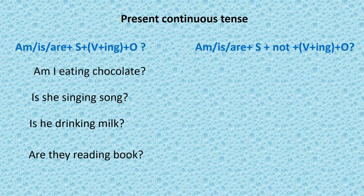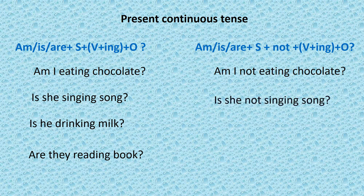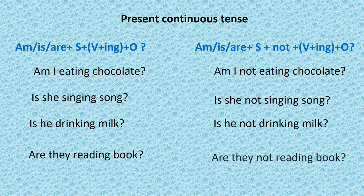Negative questions: am/is/are + subject + not + verb with -ing + object. Am I not eating chocolate? क्या मैं chocolate नहीं खा रहा हूं? Is she not singing song? क्या वो गाने नहीं गा रही है? Is she not drinking milk? क्या वो दूध नहीं पी रहा है? Are they not reading book? क्या वे किताब नहीं पढ़ रहे हैं?